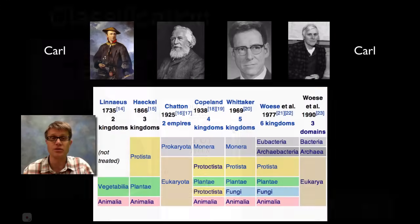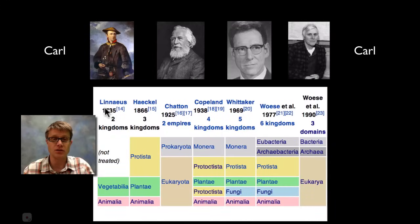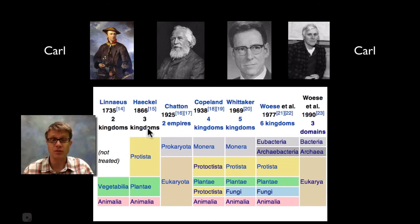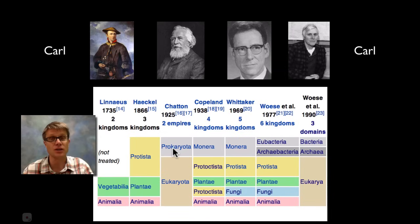If we play this through time, way back in 1735 Linnaeus develops this. Basically he would classify life as vegetable or animal. If we play this forward in time we've had a number of different taxonomists who've come up with different systems. So we've added things like protists, prokaryotes, monera.